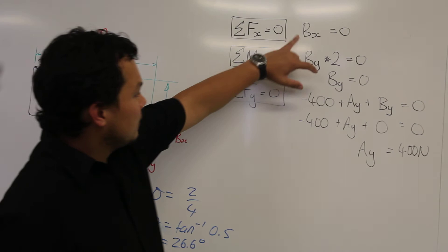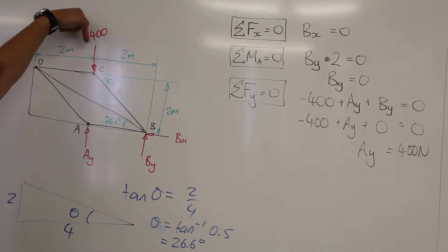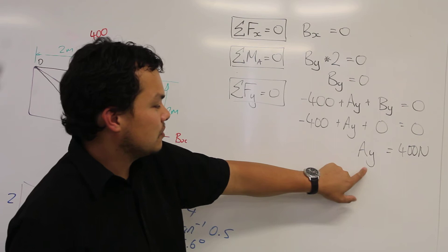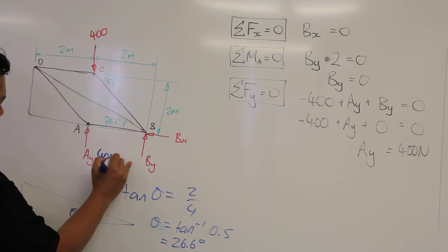Now we have our two values of Bx and By. We can now check for the forces in the y. Here we've got 400 going down, Ay going up, and By going up. Each of these are written here. We know the value of By is 0, and so we get the value of Ay rearranging this equation as 400 newtons. Okay, so our reaction forces now are 400 newtons here, By equal to 0, Bx equal to 0, and our 400 newtons.